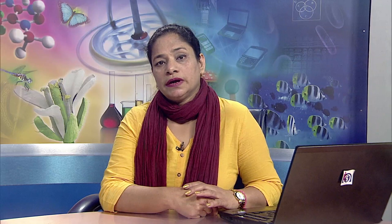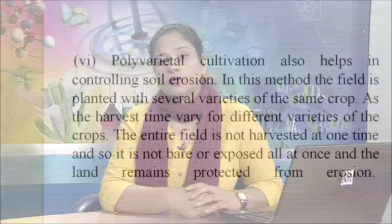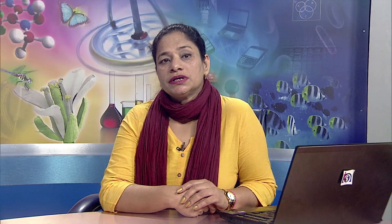No-till cultivation is used as a preventive method for soil erosion; specialized machinery can loosen the soil, plant seeds and control weeds all at once with minimum disturbance of the soil, reducing the time for erosion to occur. Crops are planted into untilled soil by opening a narrow slot of sufficient width and depth to obtain seed coverage. Polyvarietal cultivation also helps in controlling soil erosion; in this method the field is planted with several varieties of the same crop with varying harvest times, so the entire field is not bare or exposed at any one time. Addition of organic matter to soil is also an important method for reducing erosion; microbes decompose organic matter and produce polysaccharides which act as glue, binding soil particles together and helping the soil to resist erosion.